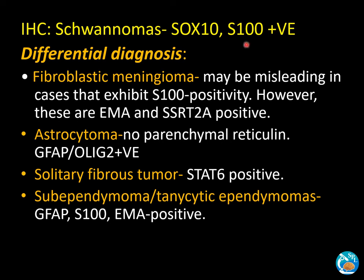Immunohistochemistry shows positivity for SOX10 and S100. For differential diagnosis of schwannoma, especially at the CP angle, fibroblastic meningioma is a consideration. Although schwannomas account for 85% of CP angle tumors, fibroblastic meningiomas are known to exhibit S100 immunopositivity. In such cases, EMA and somatostatin receptor 2A help distinguish meningioma from schwannoma, as schwannoma will be positive for SOX10. These are the important immunomarkers.